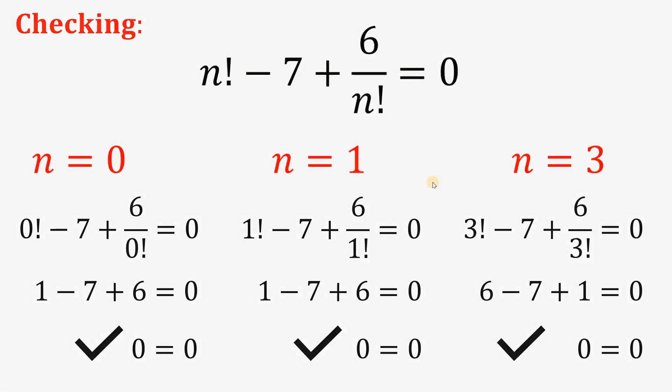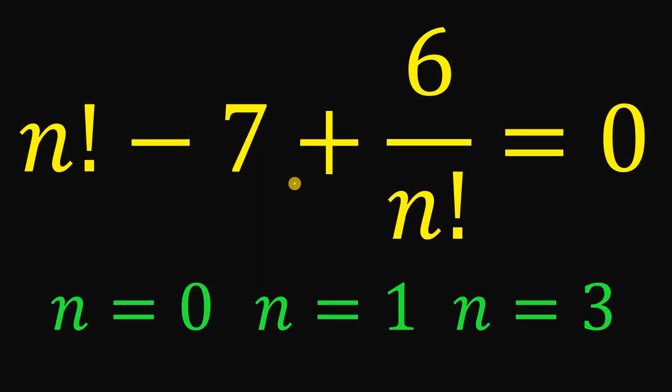Therefore, given this equation, then we have three possible values for n: n equals 0, or n equals 1, or n equals 3. And as always, we are done.